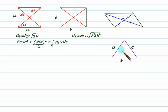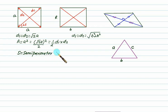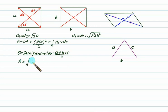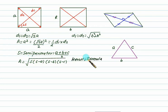For any triangle whose sides are a, b, and c, we can calculate the area using the semi-perimeter. The semi-perimeter s = (a + b + c) / 2, and then area = √(s × (s−a) × (s−b) × (s−c)). This is Heron's formula, and we will solve several problems based on it.